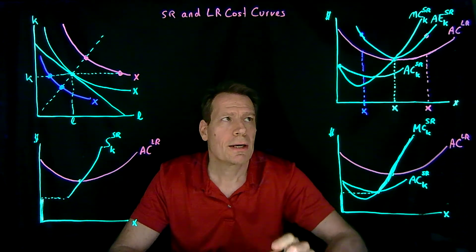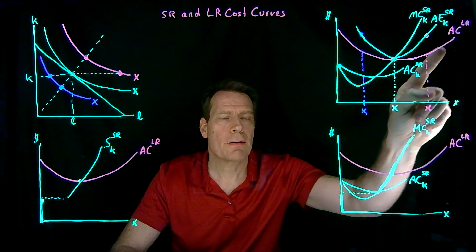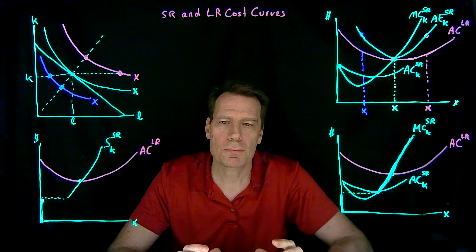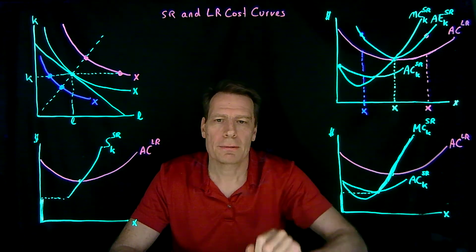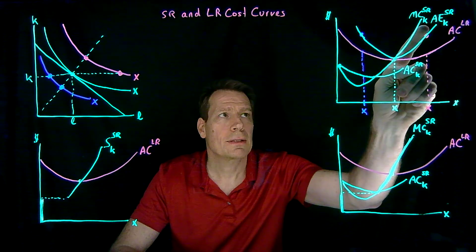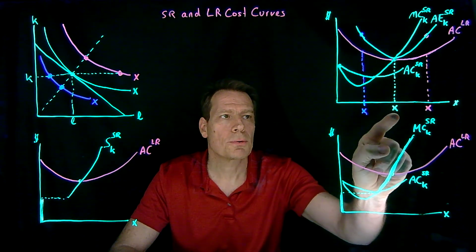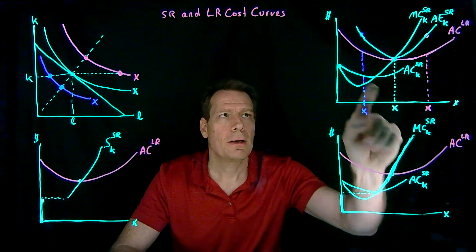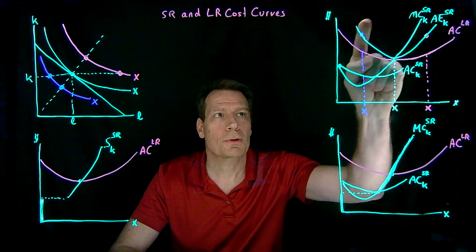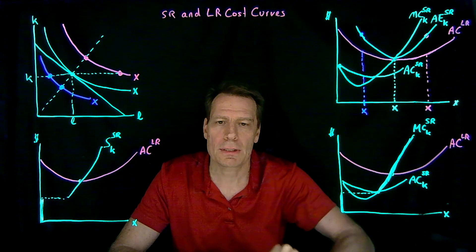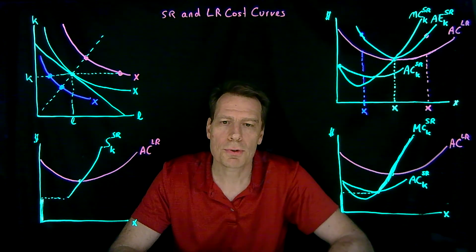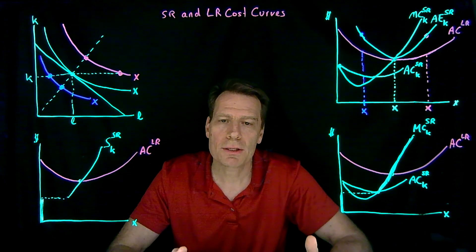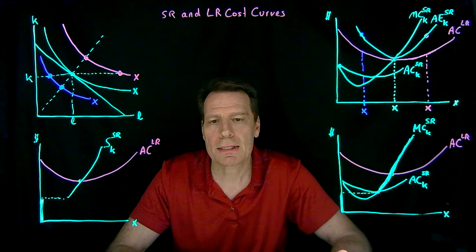Notice that we only have a single long-run average cost curve, but we have lots of short-run marginal cost curves — there's a short-run marginal cost curve for every level of capital. We just use the one that has the right amount of capital to produce this level of output. There are other marginal cost curves running all over this picture; we're just not drawing them. We're going to emphasize this short-run marginal cost curve because it'll be the one that's useful for what's coming up next in the course.